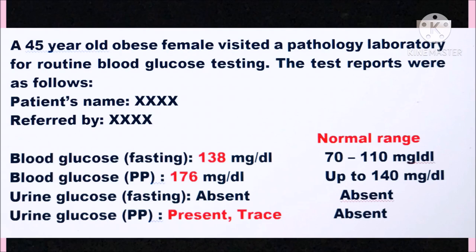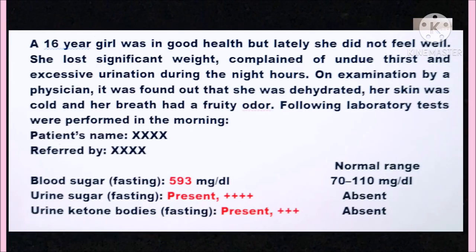In the postprandial urine, glucose is present, which indicates that the renal threshold for glucose was crossed. Now, see this report of a 16-year-old girl. Her fasting blood sugar was very high, and in urine a very high percentage of glucose was detected, along with the presence of ketone bodies. These observations indicate a clinical condition known as acidosis and ketosis, and that was the reason why her breath indicated a fruity odor.